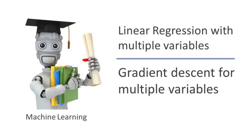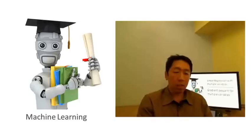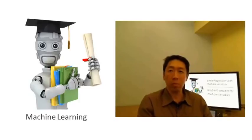In the previous video, we talked about the form of the hypothesis for linear regression with multiple features, with multiple variables. In this video, let's talk about how to fit the parameters of that hypothesis. In particular, let's talk about how to use gradient descent for linear regression with multiple features.